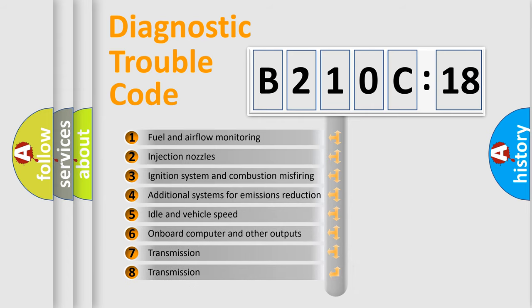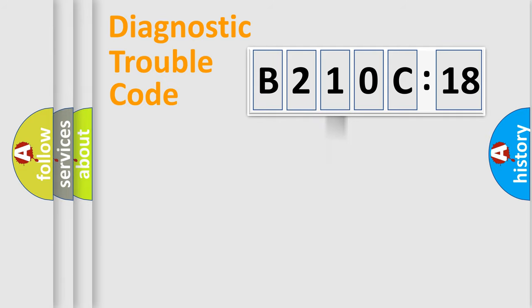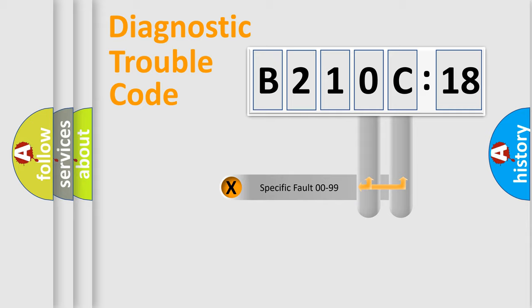The third character specifies a subset of errors. The distribution shown is valid only for the standardized DTC code. Only the last two characters define the specific fault of the group.